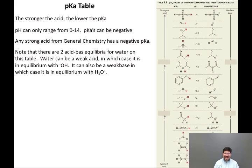Note that there are two acid-base equilibria involving water on this table. Water can be a weak acid. It has a pKa of 15.7, and that is a number I expect you to keep in your back pocket. That will come up again and again, both in this course and in other chemistry courses. Water is a weak acid. It's in equilibrium with OH-. But water is also a weak base, in which case it's in equilibrium with H3O+, and the pKa of H3O+ is negative 1.74.